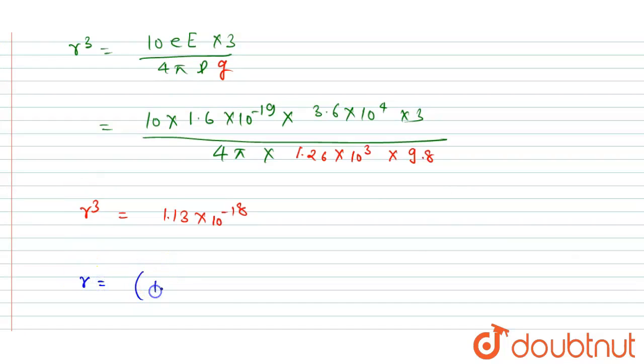Now if you take cube root both sides, then you will get r equals 1.13 × 10⁻¹⁸ to the power 1/3, which equals 1.04 × 10⁻⁶ meter, and this will be the answer of this question.